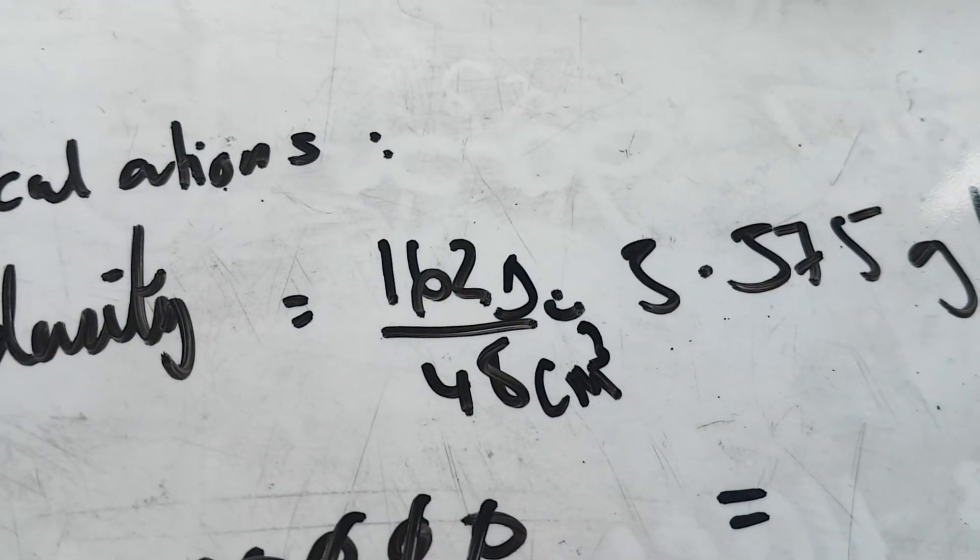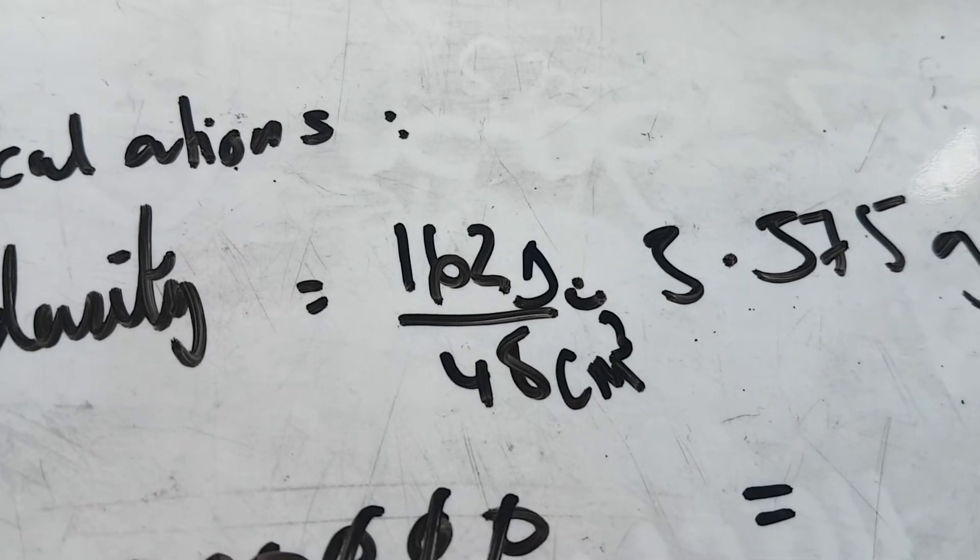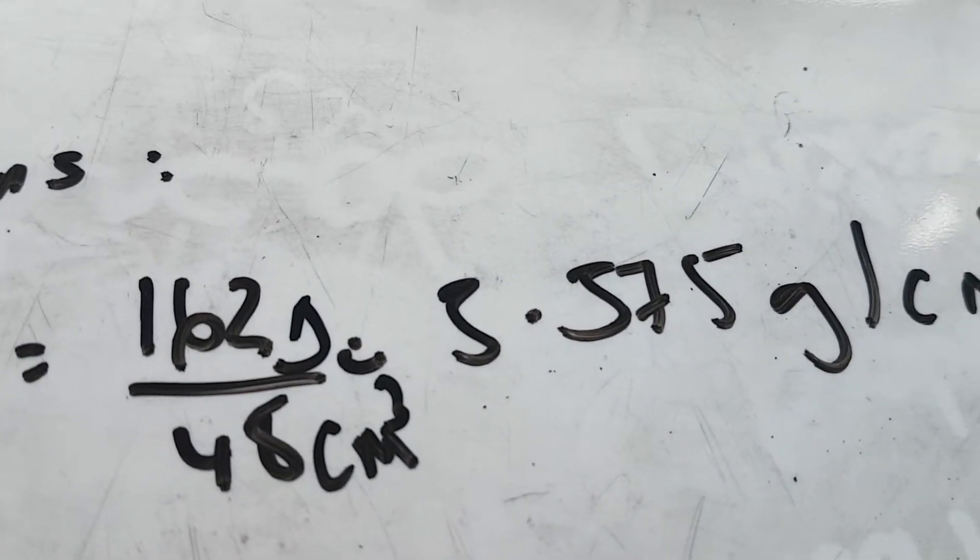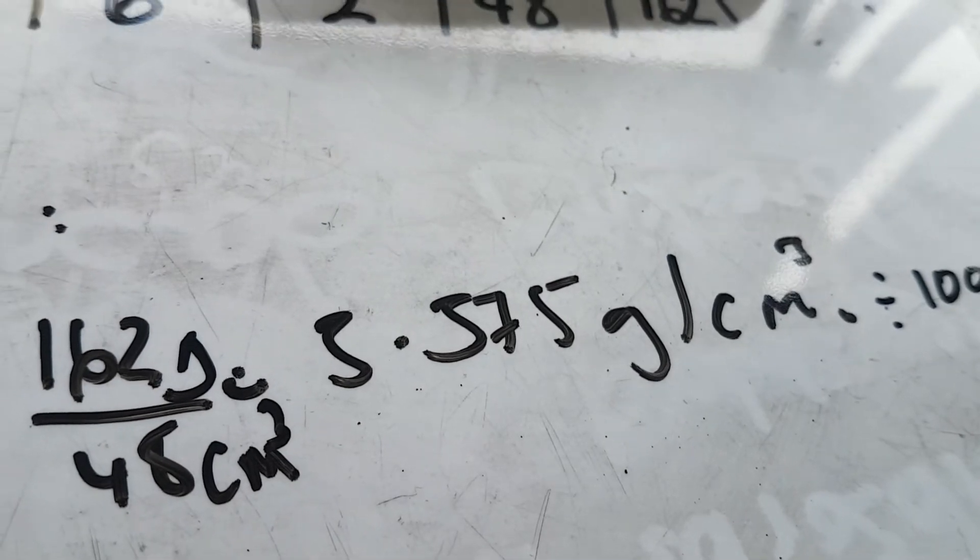So it's 162 grams divided by 48 centimeters cubed, which equals 3.375 grams per centimeter cubed.